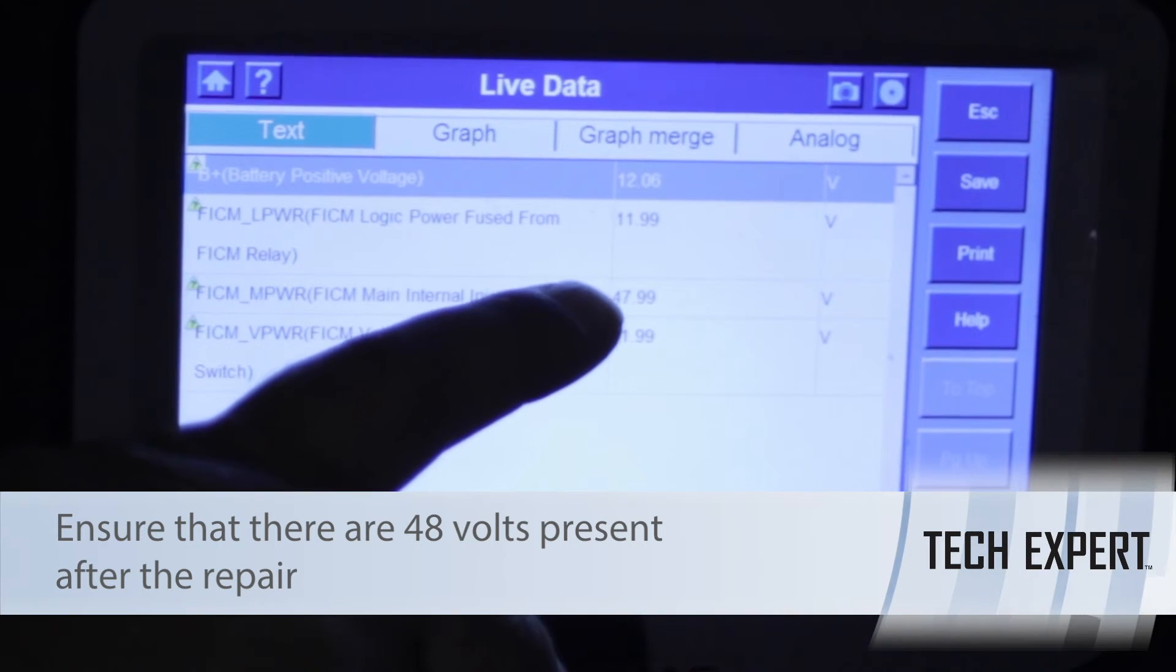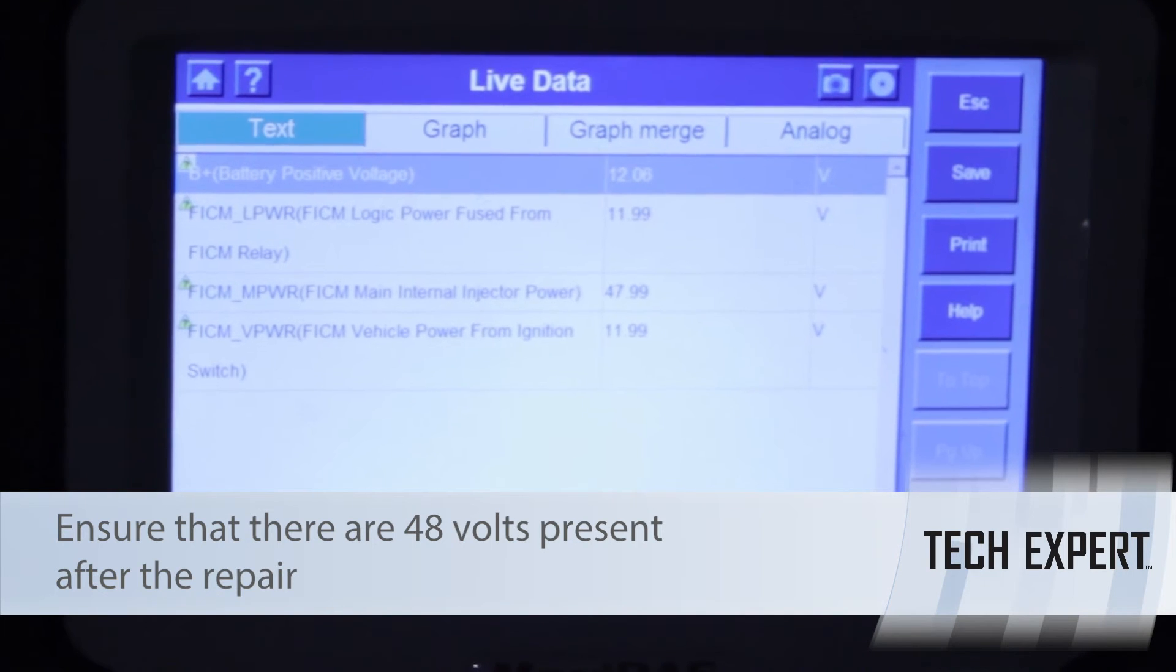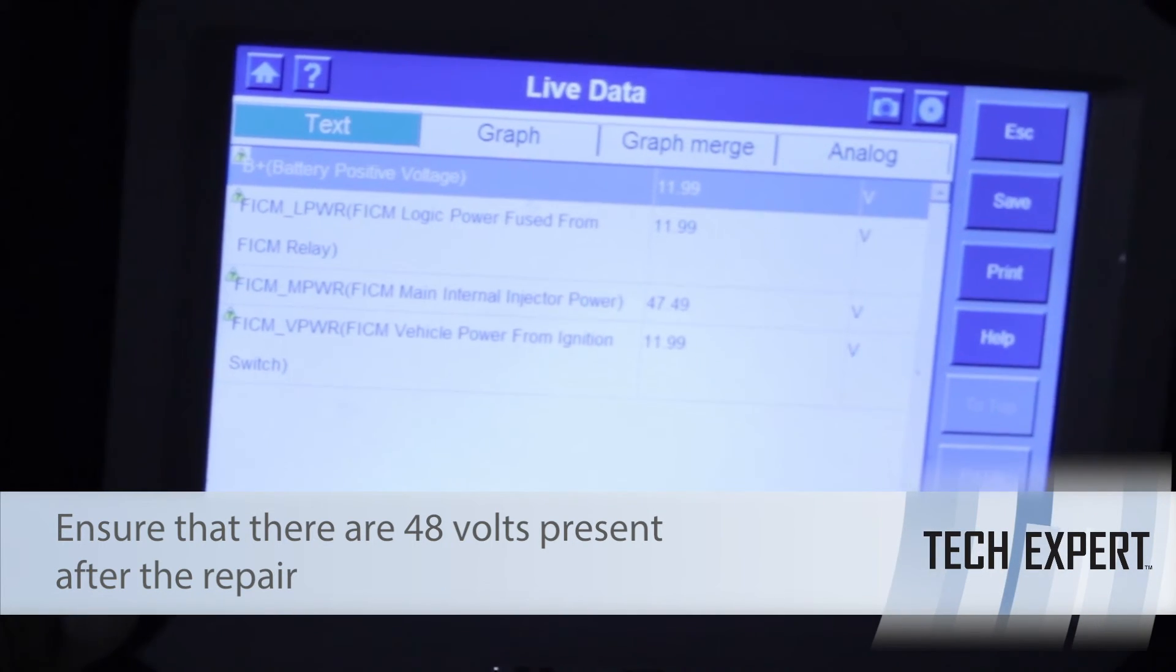And so now that we've gone ahead and replace this our voltage is back to where it should be. I'm going to go ahead and clear out any codes that may have been stored by the faulty FICM and let's see if the truck starts.